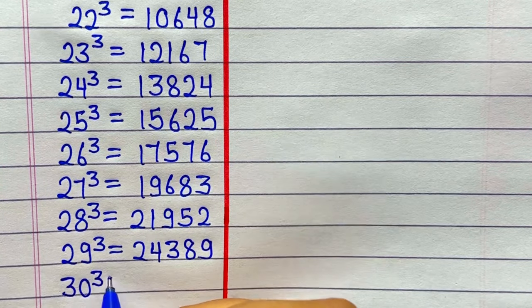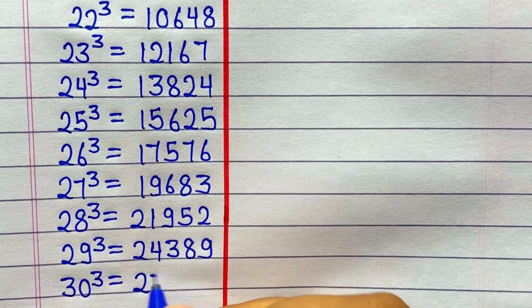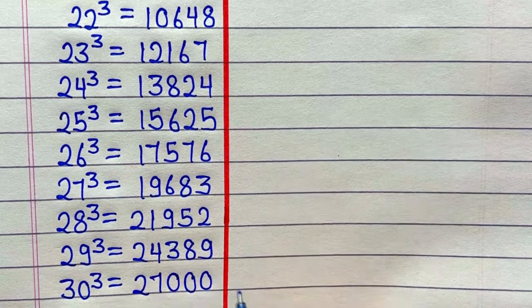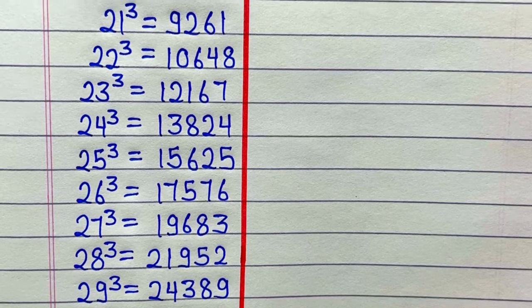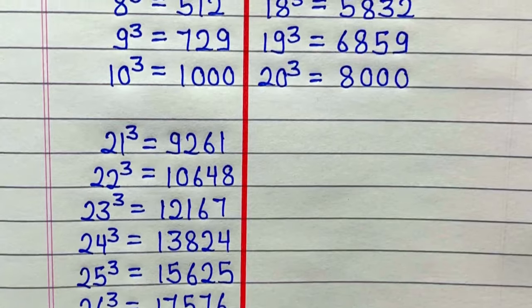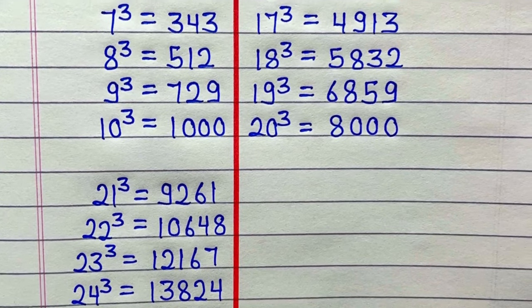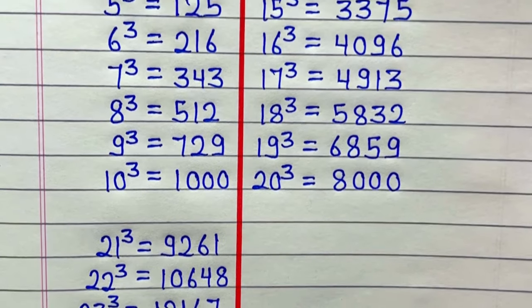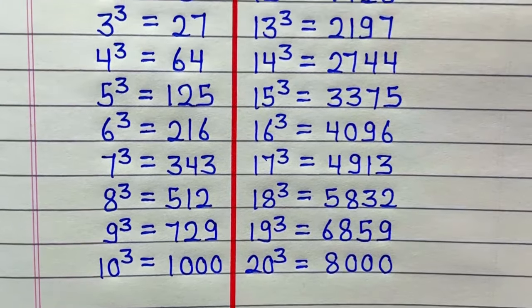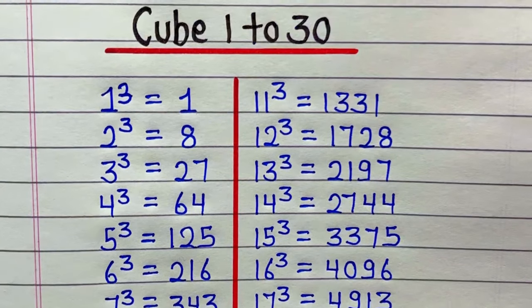30 ka cube hoga 27000. Square root and cube root 1 to 30. Thanks for watching and stay connected for more videos.